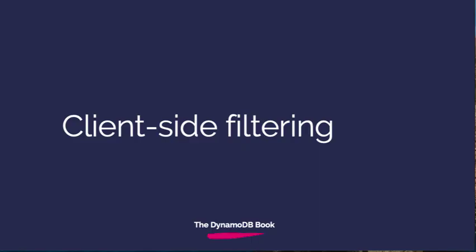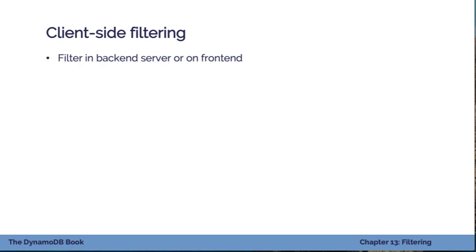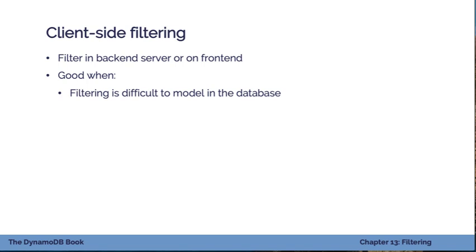The final strategy isn't really a DynamoDB strategy at all, but it's one you need to keep in mind when thinking about your application as a whole: client-side filtering. You filter results in your backend server or on the front end rather than in DynamoDB. A lot of people get hung up thinking they need to do everything in DynamoDB and end up adding all these secondary indexes for complex filtering patterns. Rick Houlihan likes to say the browser is sitting in a 99% idle loop — give it some work to do. This strategy is good when filtering is difficult to model in the database and your dataset just isn't that big. If you're only talking about half a megabyte or less of data, just grab all of it and do the filtering and sorting on the front end rather than hitting DynamoDB.